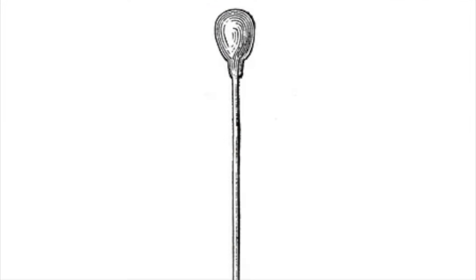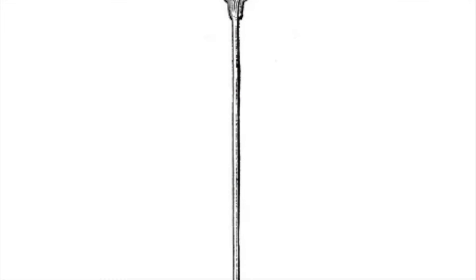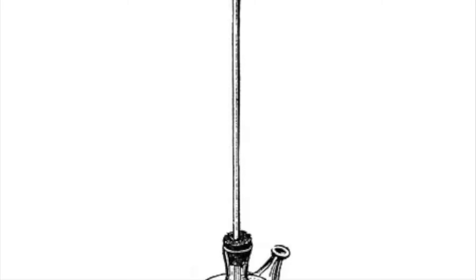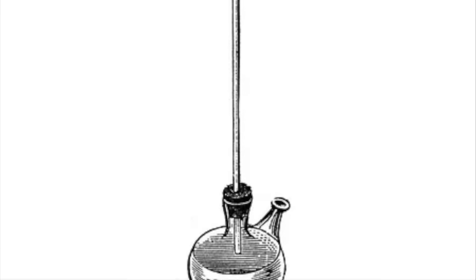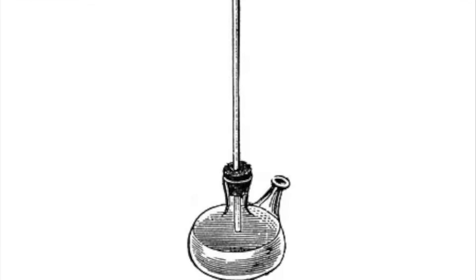Galileo did invent a type of thermometer shortly after becoming the chair of mathematics at the University of Padua in 1592, but this consisted of a small glass bulb connected by a thin glass stem to another open vessel, the stem and the vessel being filled with either water or spirit of wine, aka distilled alcohol. When the bulb was heated the air inside would expand and push the fluid down the stem. However this device is more correctly termed a thermoscope than a thermometer since it was missing the meter part — it didn't have any sort of scale and so could only crudely display various temperature differences.